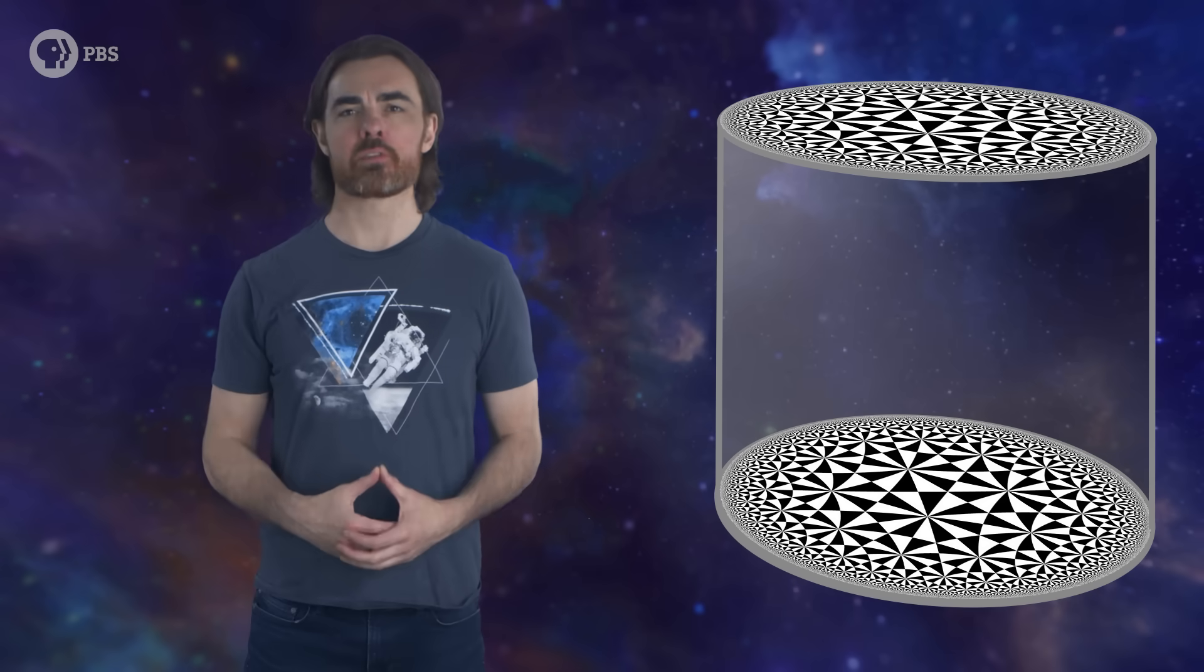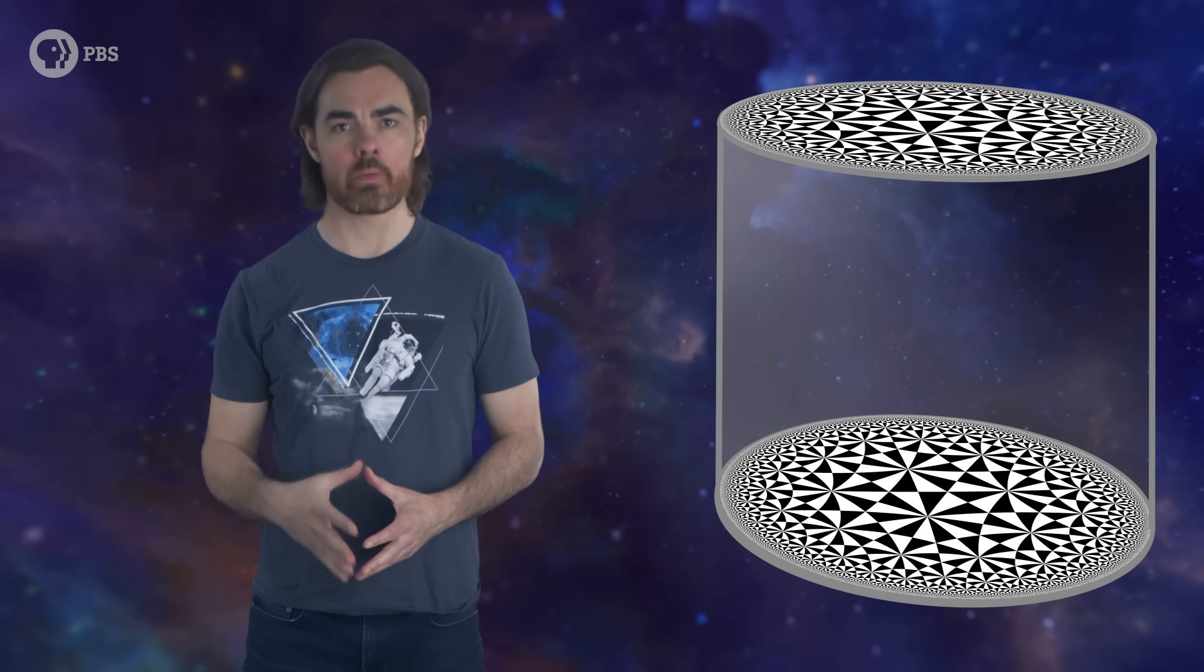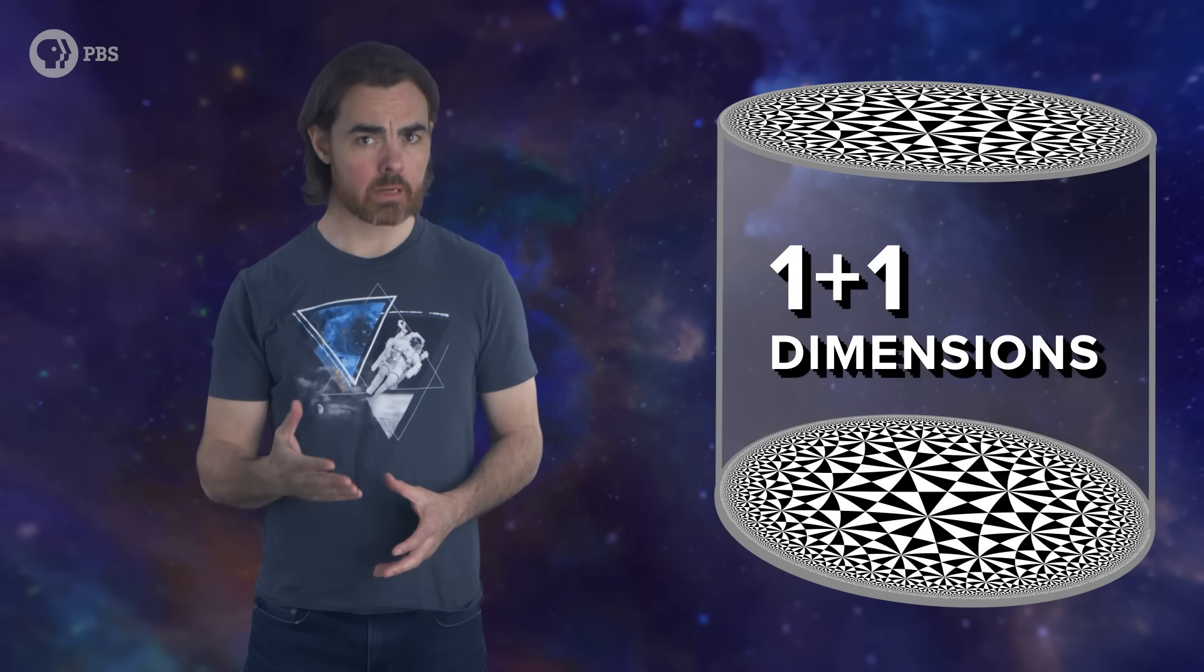On the other hand, the surface of the cylinder has only one dimension of space, the circumference, and the same one dimension of time, 1 plus 1. Right? So it turns out that the surface of the cylinder, which exists only in the compactified coordinates of the interior volume, is mathematically exactly a flat Minkowski space.